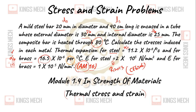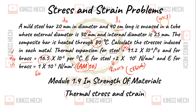E for steel, ES — that value. E for brass, EB — that value. This is how we can approach it: the formula involves alpha into T into L, which gives thermal stress on the compound bar with 2 metals.